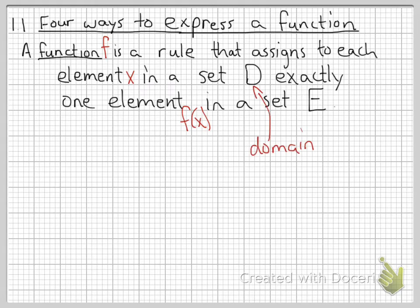We also have a name for D, that set with all the inputs, that's called the domain. E may or may not be the set of all the outputs. It might have some extra stuff in there. The set of all the outputs is called the range, or sometimes the codomain, or sometimes the image. It's less important for us than the domain will be.